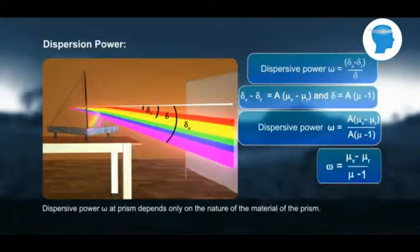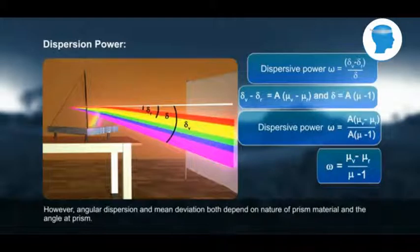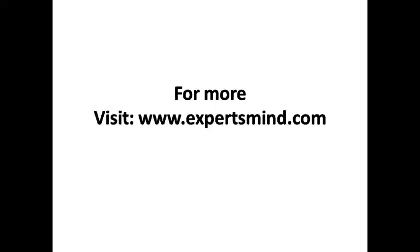Dispersive power ω of prism depends only on the nature of the material of the prism. However, angular dispersion and mean deviation both depend on nature of prism material and the angle of prism.